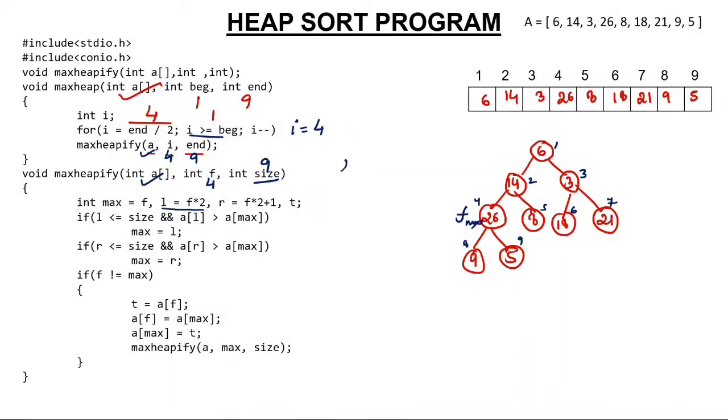What is L? F into 2. I already told you what is left child. If any index is i, then left child is 2i and right child is 2i plus 1. So L becomes F into 2, that is 4 into 2. Right will become F into 2 plus 1. Again I will compare to find maximum. Since this is the maximum.